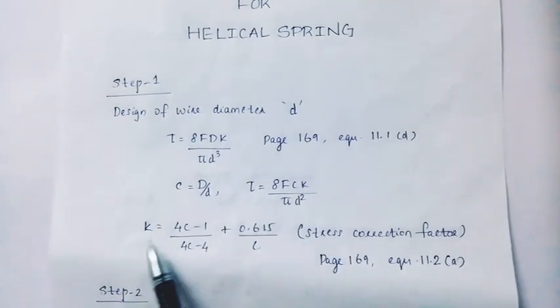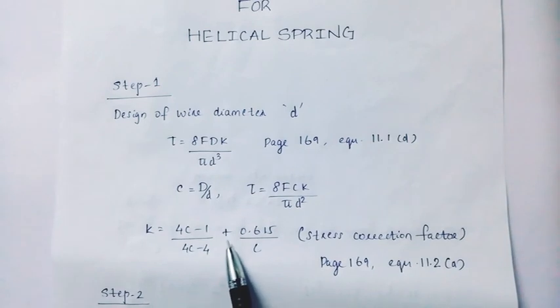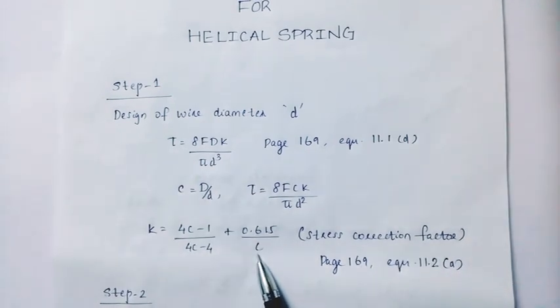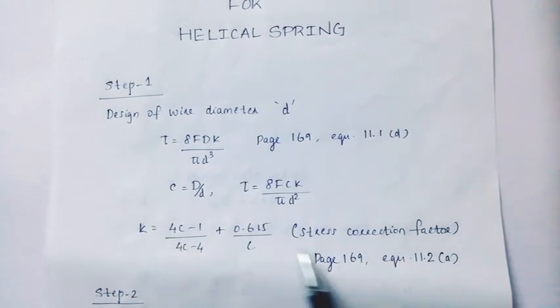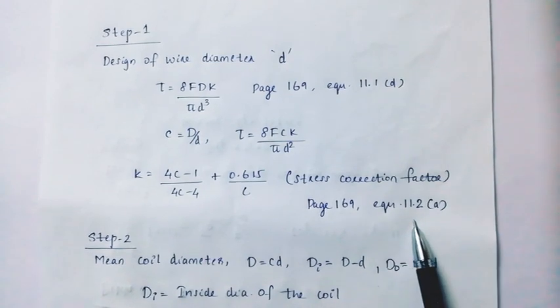Now we are going to take k. K equals 4c minus 1 divided by 4c minus 4 plus 0.615 divided by c. This is the stress correction factor. This is page 169, equation 11.2a.